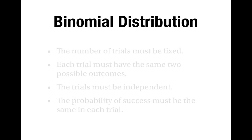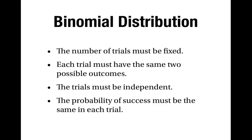So there are four criteria to remember to know whether the binomial distribution applies: the number of trials must be fixed; each trial must have the same two possible outcomes — a definite success or a definite failure; the trials have to be independent; and the probability of success must be the same in each trial. This is the end of the video about criteria for using the binomial distribution.